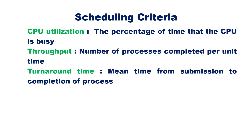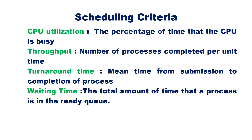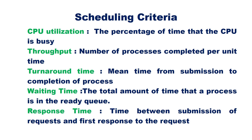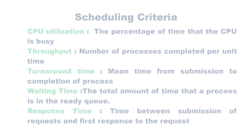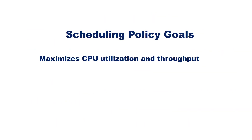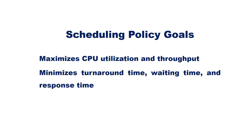Waiting time is the total amount of time that a process spends in the ready queue. Response time is the time between the submission of a request and the first response to that request. The goal of scheduling policies is to maximize CPU utilization and throughput, and minimize turnaround time, waiting time, and response time. In the next video, we will discuss the different types of scheduling algorithms.